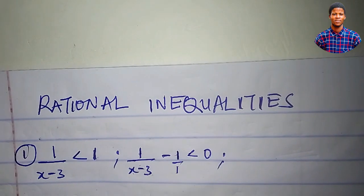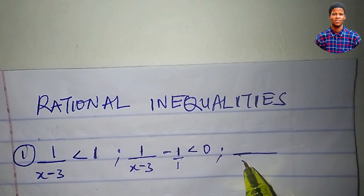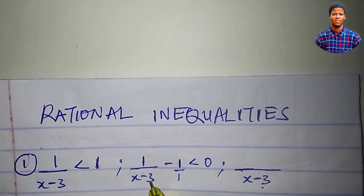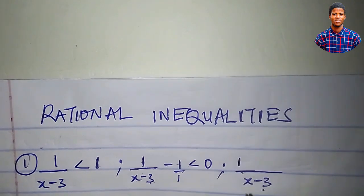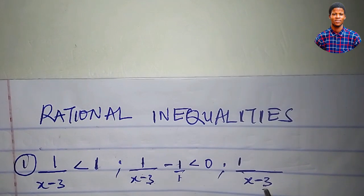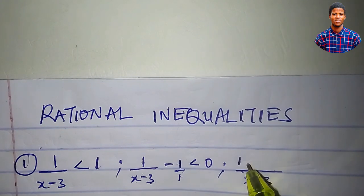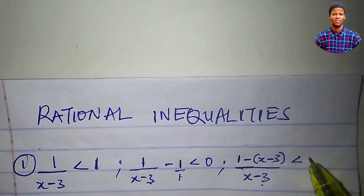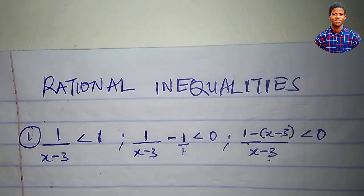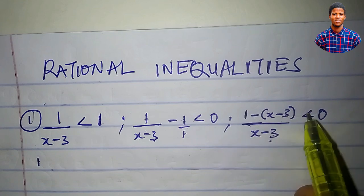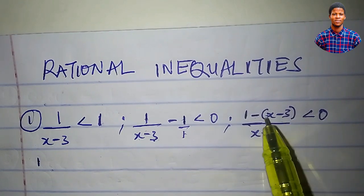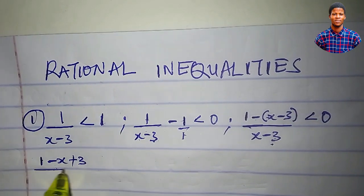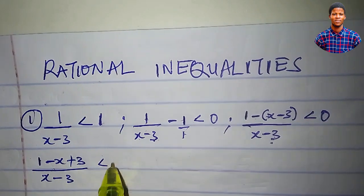The LCM is x minus 3. x minus 3 divided by x minus 3 is 1; 1 times 1 is 1. x minus 3 divided by 1 is x minus 3, times minus 1. We'll have minus x minus 3. Expanding the brackets, we'll have minus x plus 3 — minus minus is a plus — so we'll have minus x plus 3, all over x minus 3, which is less than 0.